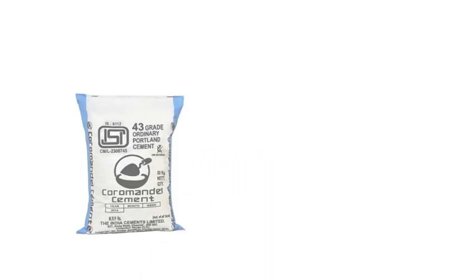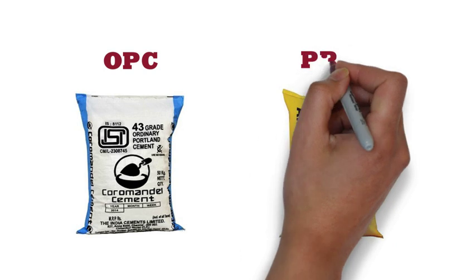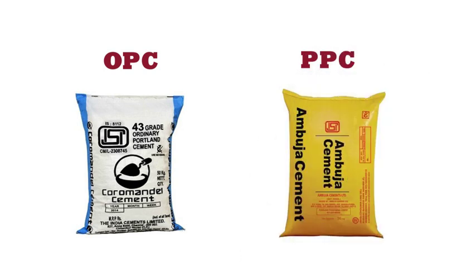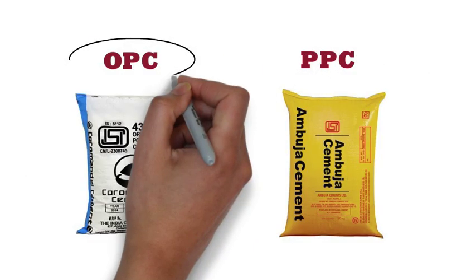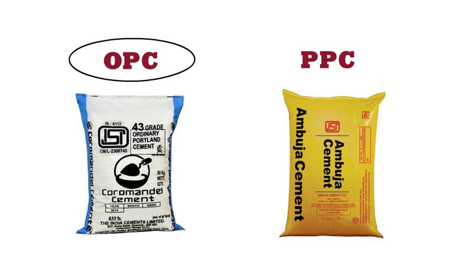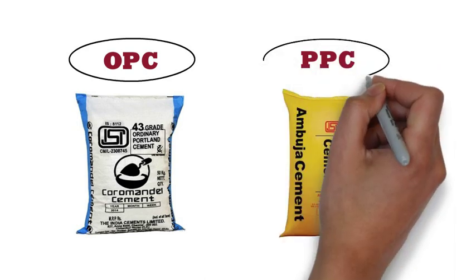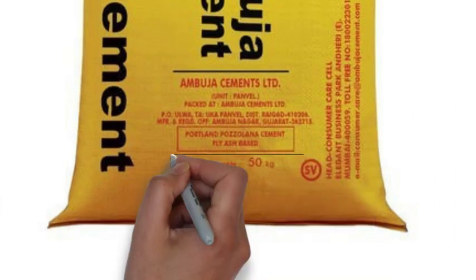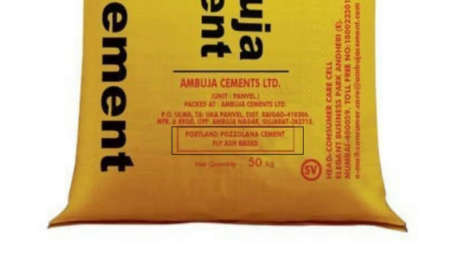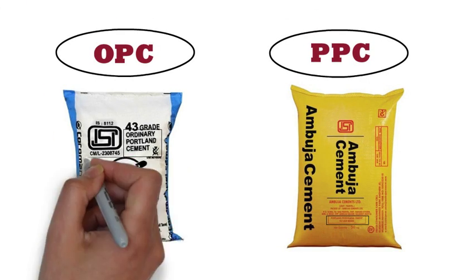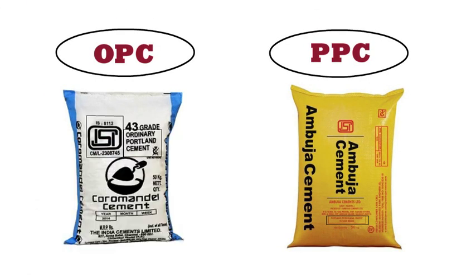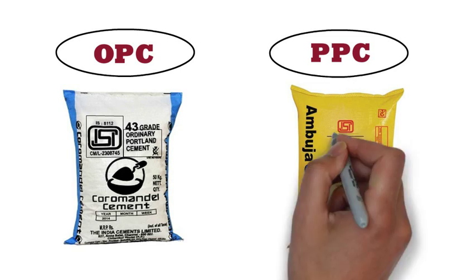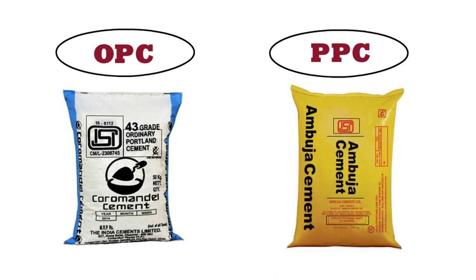Hello friends, in this video we will see the differences between OPC and PPC. The long form of OPC is Ordinary Portland Cement, and the long form of PPC is Portland Pozzolana Cement. The ISI mark on an Ordinary Portland Cement bag is black in color, whereas the ISI mark on a Portland Pozzolana Cement bag is red in color.